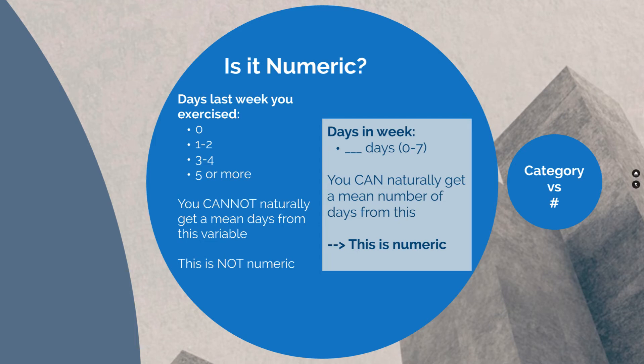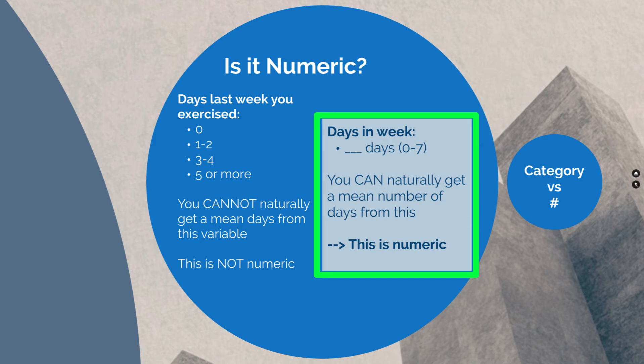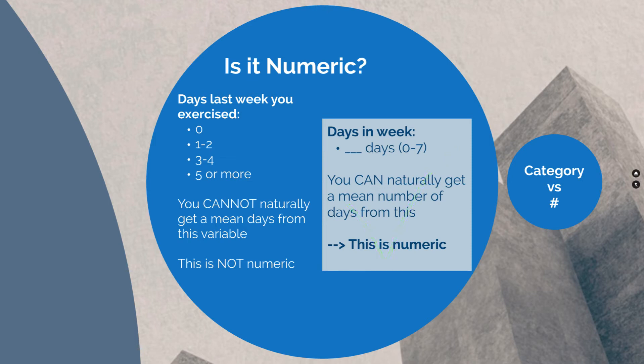However, if you collected it as the number of days in a week and allowed your respondent to select or write in zero, one, two, three, four, five, six, or seven, you can naturally get a mean number of days from this collection. This is numeric.